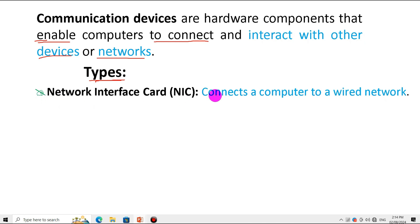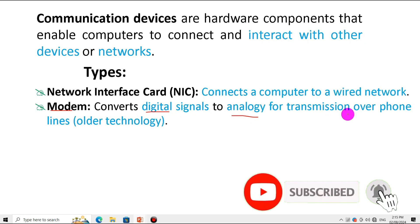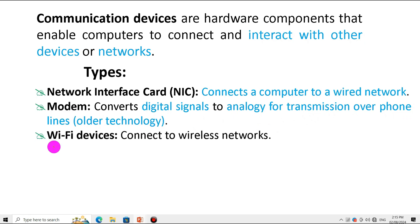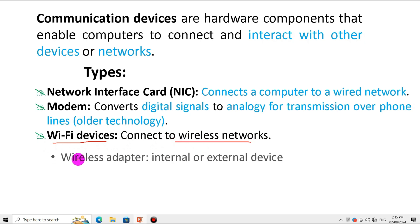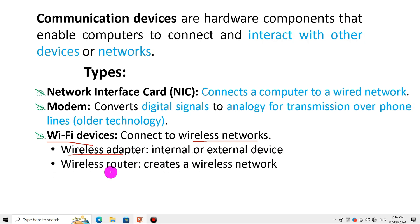The network interface card connects the computer to a wired network. Another type of communication device is the modem, which converts digital signals to analog for transmission over a phone line — though it is older technology. Wi-Fi devices connect to wireless networks, for example a wireless adapter, which can be an internal or external device.